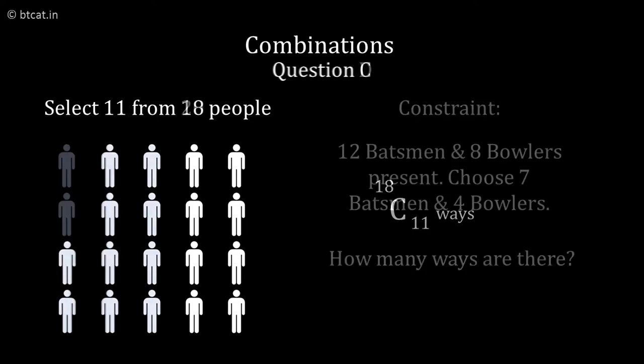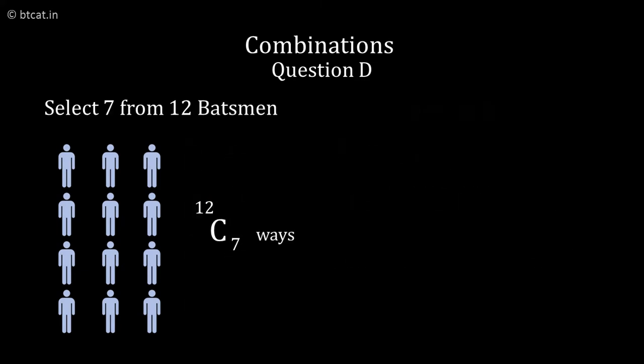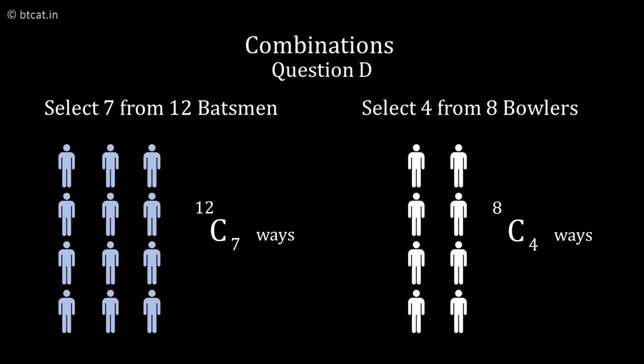There can be a case in which the breakup is I have to make 7 batsmen and 4 bowlers out of the team of 11. And out of the 20 people, I have been given that there are 12 batsmen and 8 bowlers. How many ways are there of making the team? Here I have to choose 7 batsmen out of 12, which is 12C7. I have to choose 4 bowlers out of 8, which is 8C4. Therefore, it is 12C7 and 8C4.